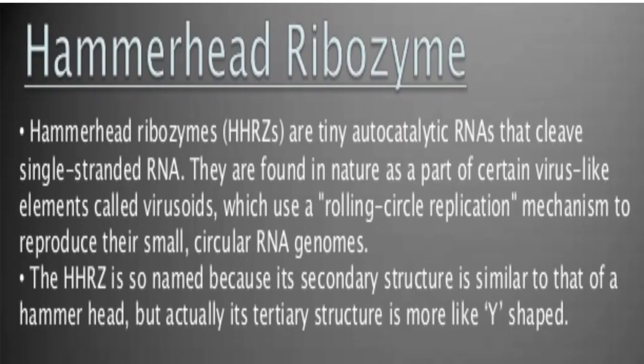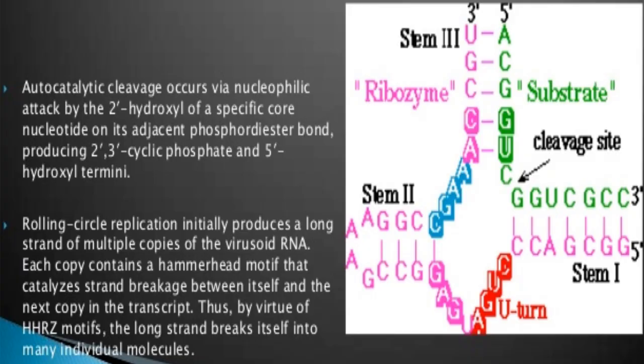Hammerhead ribozymes are tiny autocatalytic RNAs that cleave single-stranded RNA. They are found in nature as part of certain virus-like elements called viroids, which use a rolling circle replication mechanism to reproduce their small circular RNA genome. The hammerhead ribozyme is so named because its secondary structure is similar to that of a hammerhead, though its tertiary structure is more Y-shaped. Autocatalytic cleavage occurs via nucleophilic attack by the 2' hydroxyl of a specific core nucleotide on its adjacent phosphodiester bond, producing 2',3'-cyclic phosphate and 5' hydroxyl termini.